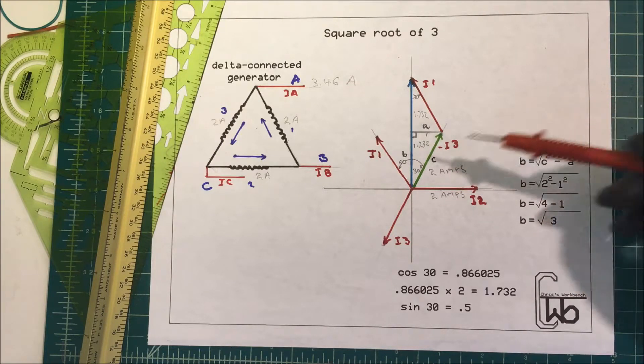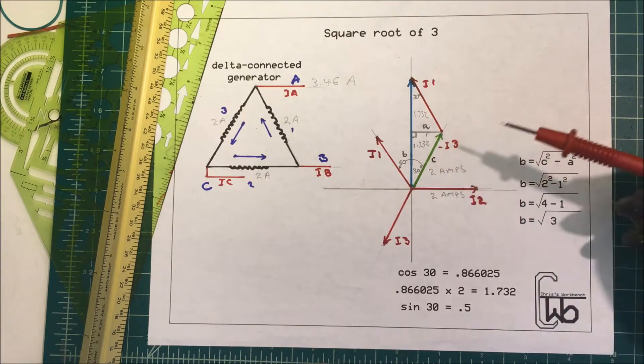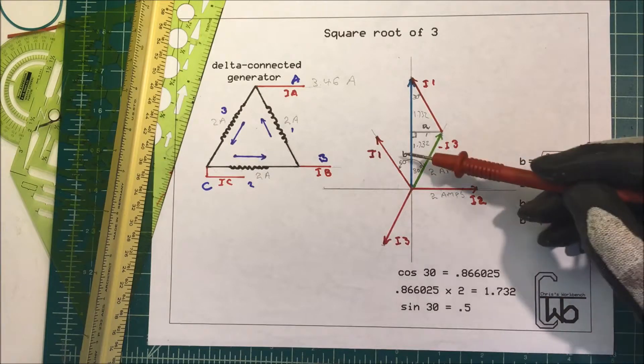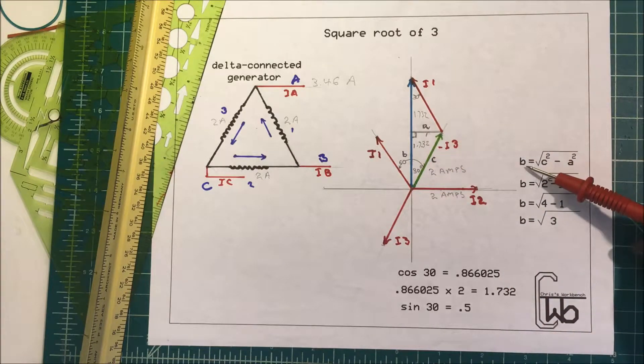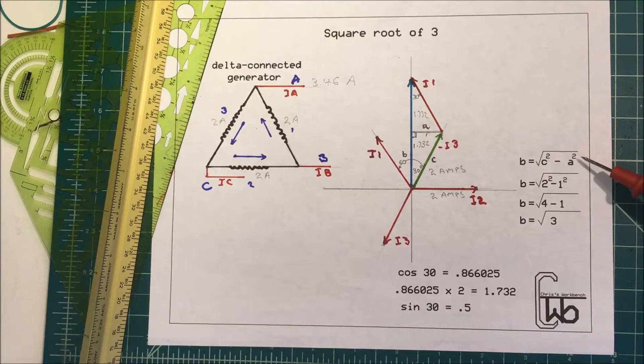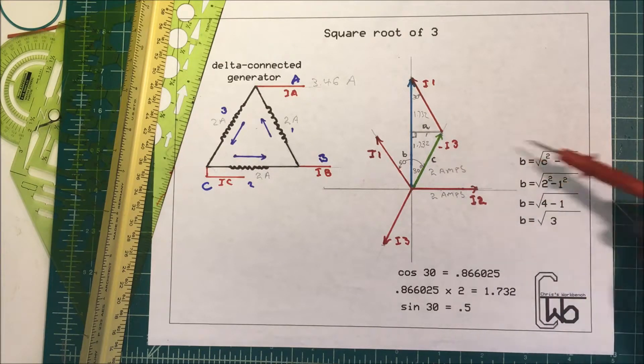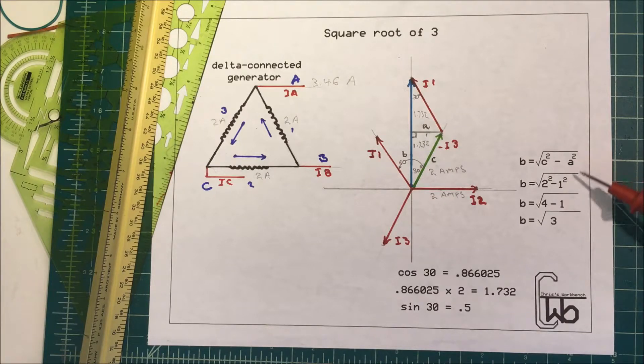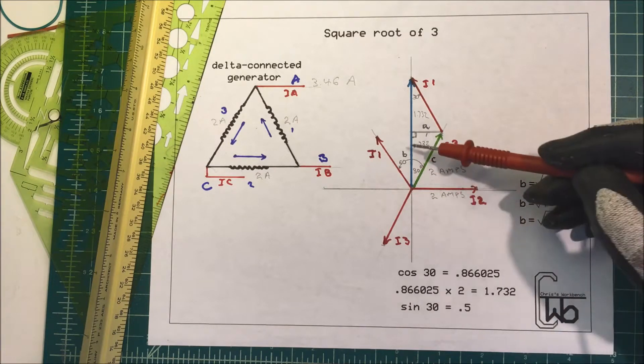We're going to use Pythagorean theorem. We're always calculating for the hypotenuse in Pythagorean theorem, but for b, b is equal to the square root of c squared minus a squared. c squared is two times two, that's four, and a squared is one, so four minus one is three. So this side here is going to be equal to the square root of three.